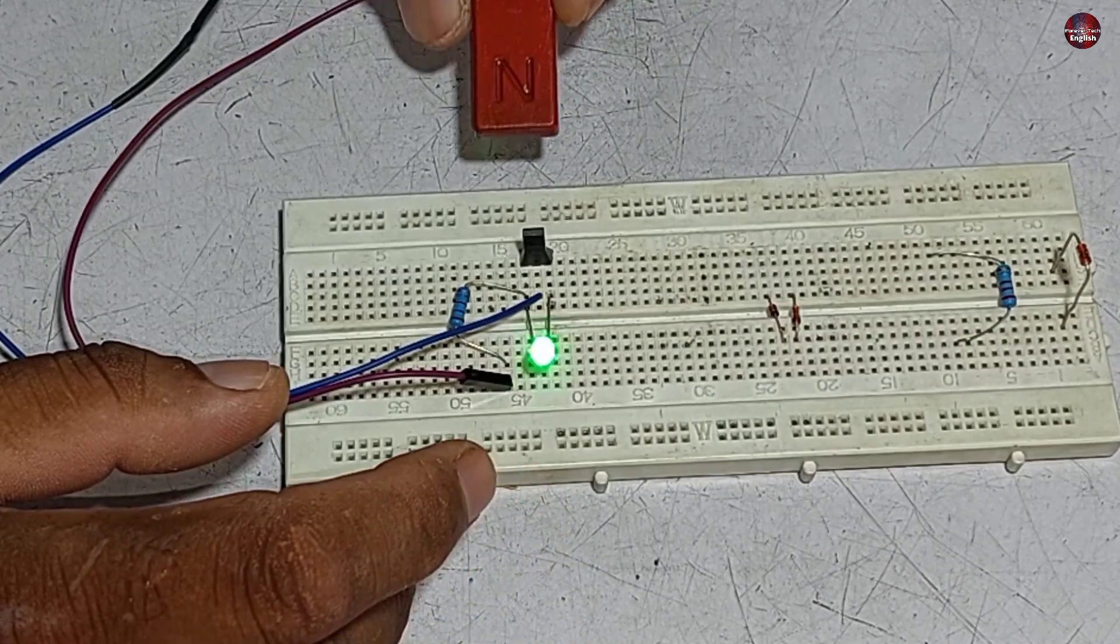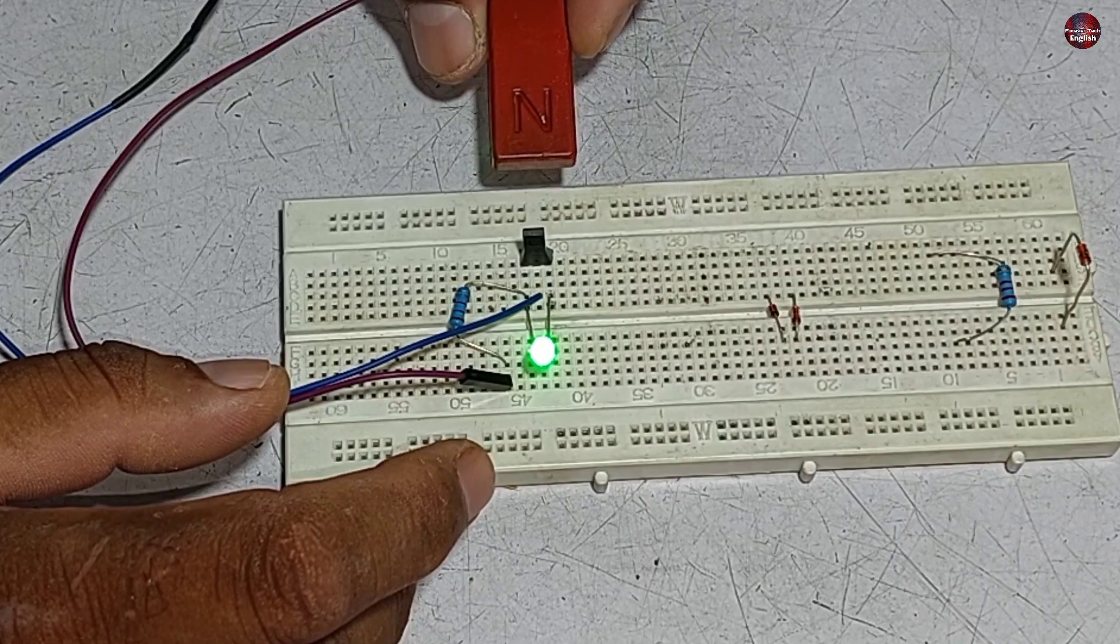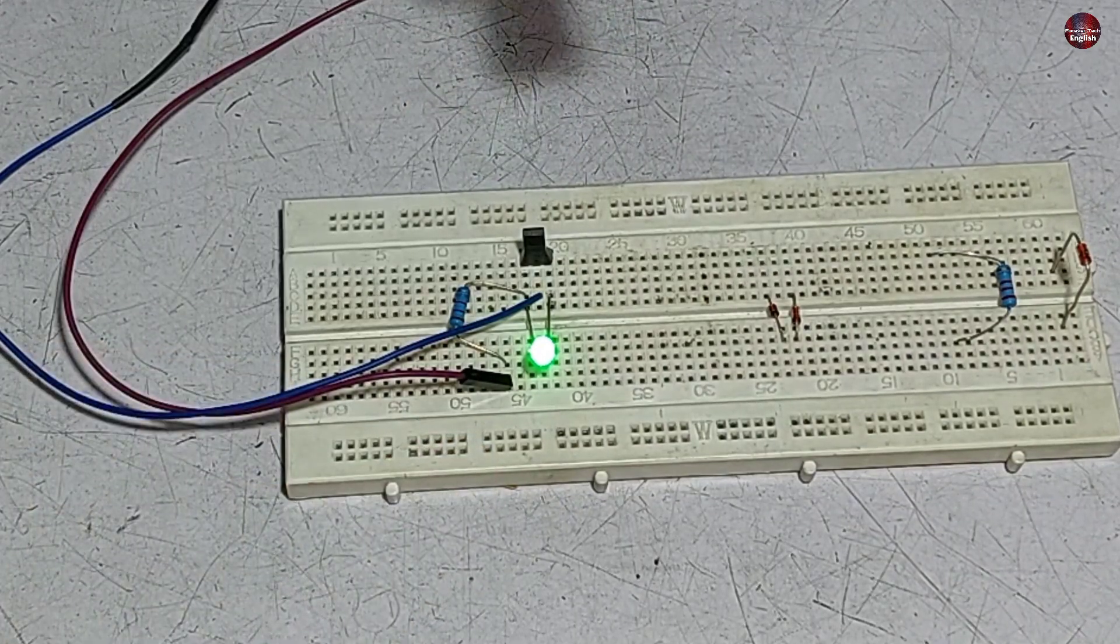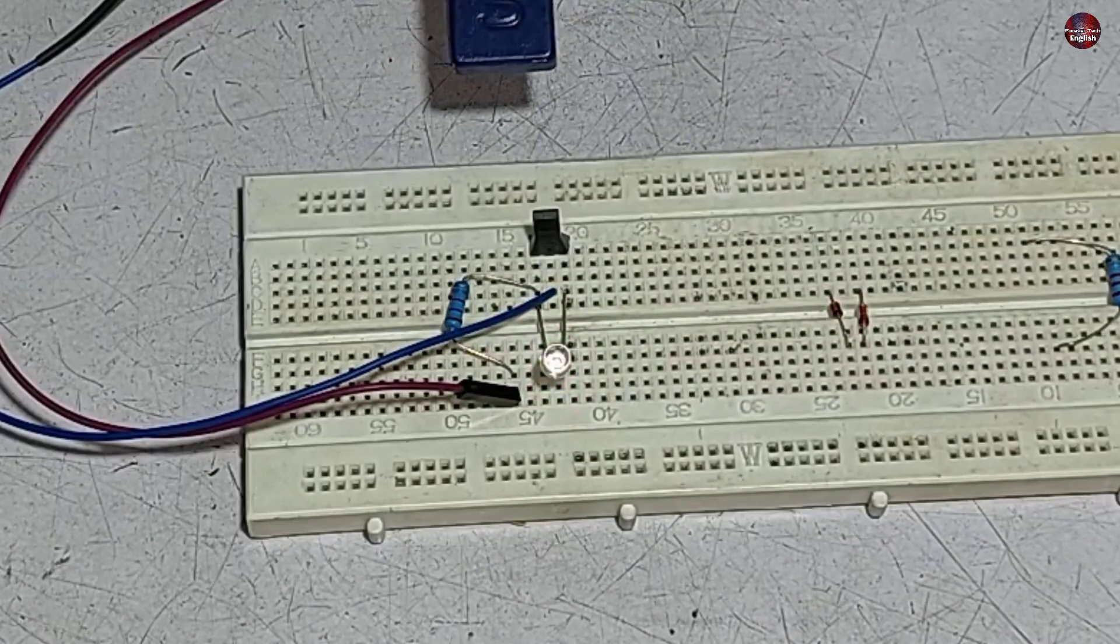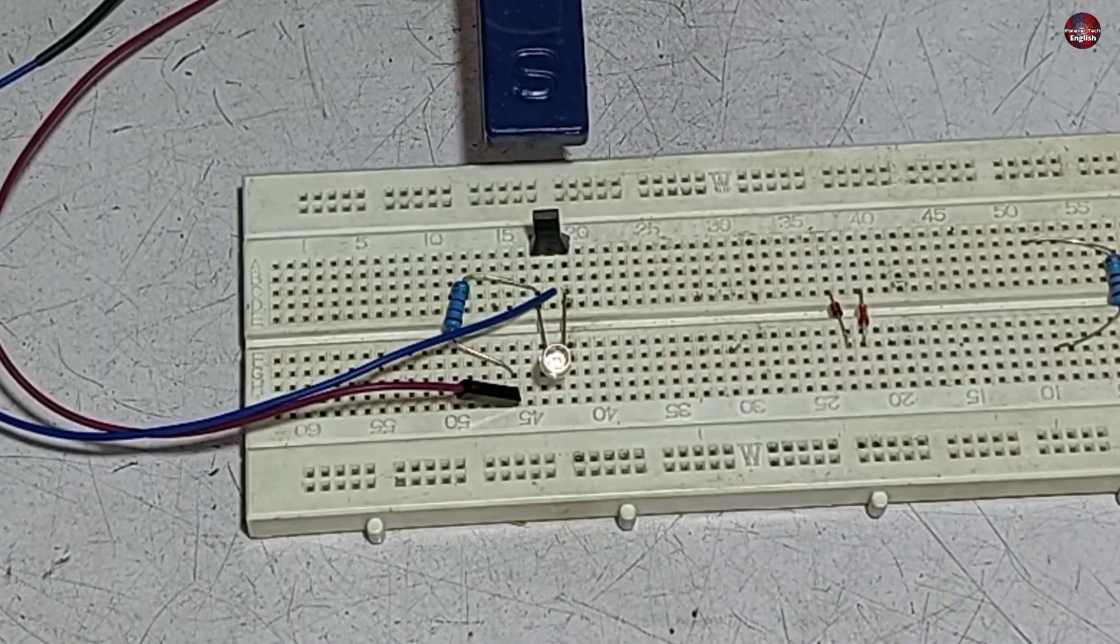And when I brought the north pole near the hall sensor, it turned on the hall sensor, and when I removed it, the light kept glowing. And it will turn off when the south pole comes near the bipolar hall sensor.